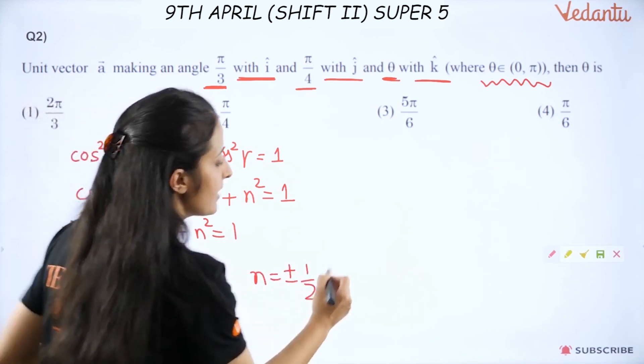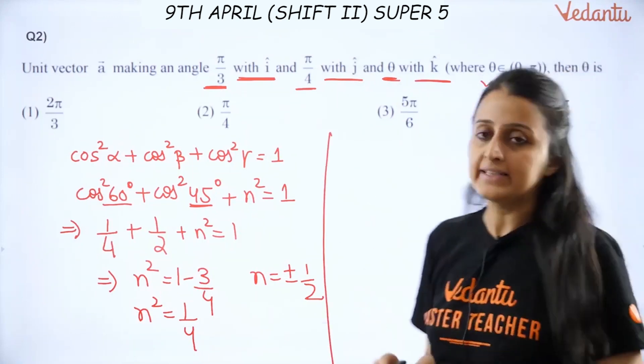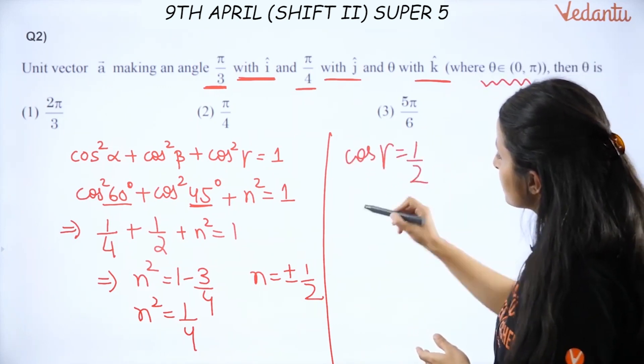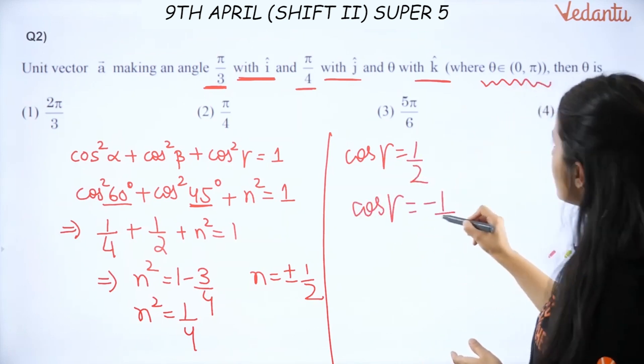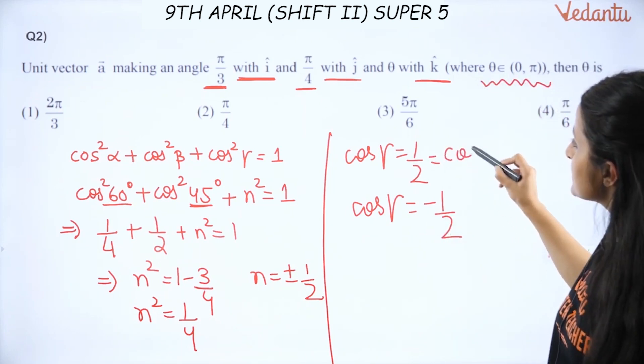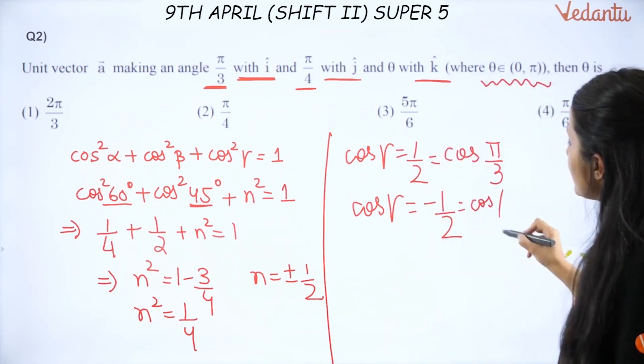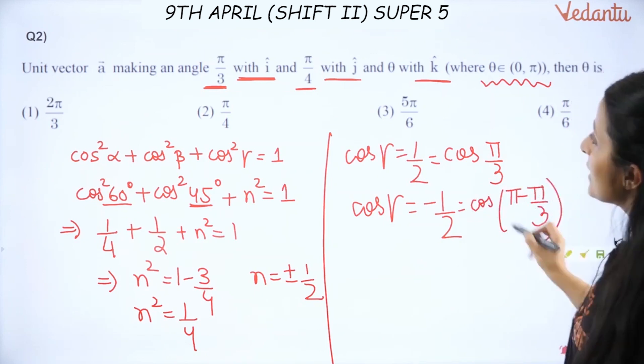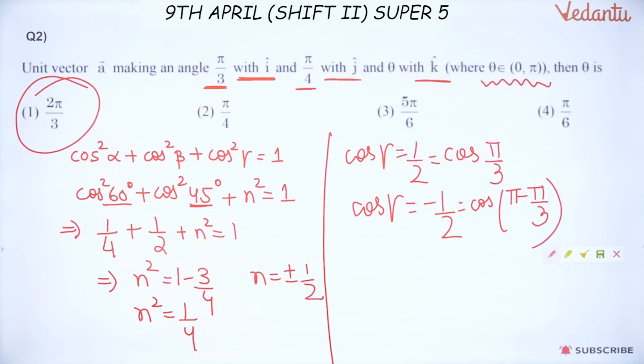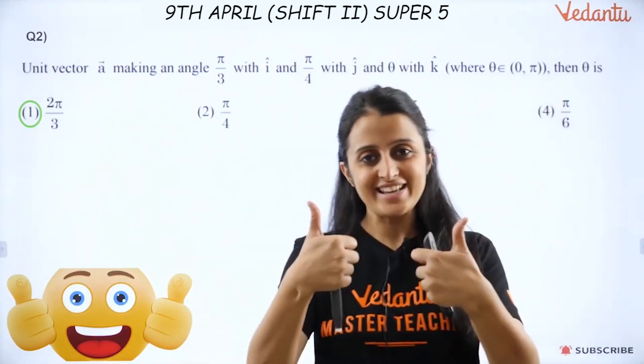Plus N² = 1. Now calculate what will come here. This will be 1 - 3/4, right? This will be 3/4, so 1 - 3/4, N² will be 1/4. So the answer is N = ±1/2. But there's a twist in the story. Here you are given it has to be between 0 and 180 degrees. So what value do we get? That means my cos γ = 1/2 or cos γ = -1/2. Now look at the options. This happens when cos is 60 degrees, meaning cos(π/3), and negative comes from cos(π - π/3), second quadrant. π/3 is not there, so 2π/3 is the required answer. So all those who got 2π/3 as the answer, once again lovely guys.